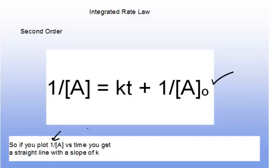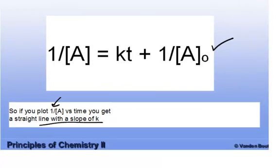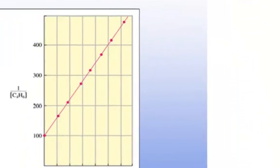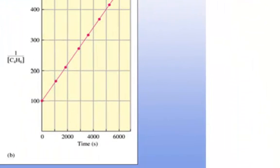If you plot 1/[A] versus time, you get a straight line with a slope of k. This is one way to determine k. Here you'll see an example with a particular compound. Plotting 1 over the concentration versus time gives a straight line where the slope equals k.